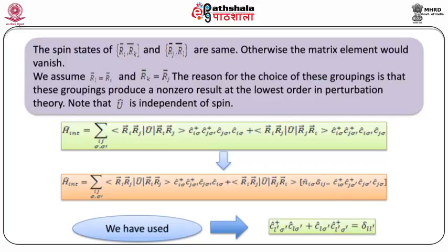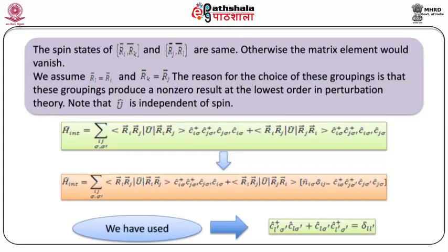Doing this, the interaction Hamiltonian is rewritten with simply i and j indices, accounting for the possibility of shifting i and j, which is why we get a two-term Hamiltonian. We then further rewrite this Hamiltonian by introducing the number operator n_{iσ}, using the relation c†_{lσ'} c_{lσ'} + c_{lσ'} c†_{l'σ'} = δ_{ll'}.